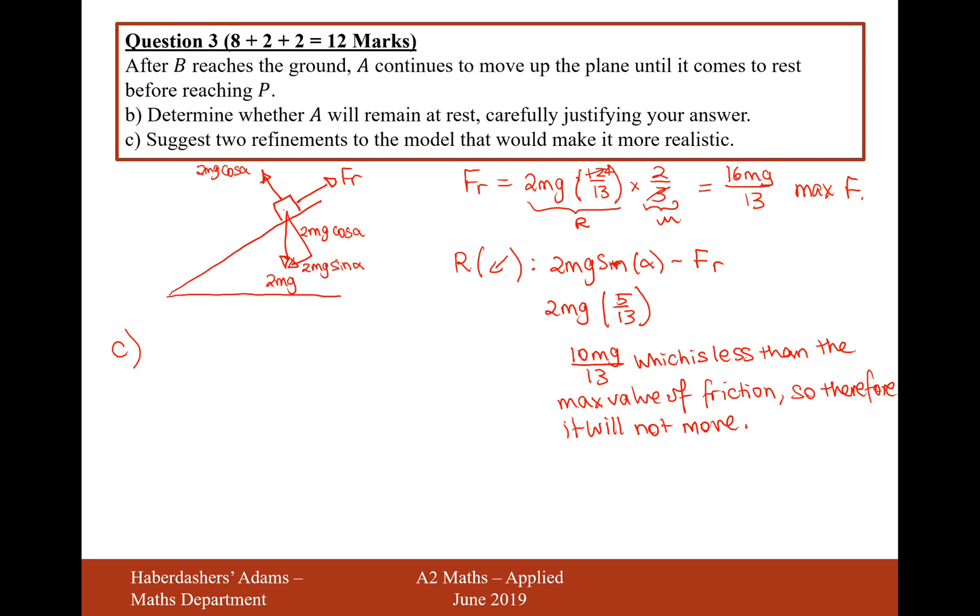Moving on to part C now, suggest two refinements to the model that would make it more realistic. Well, a couple of suggestions are down in the mark scheme, so have the model consider air resistance, and have the string use an extensible string, so slightly springy string, a more elastic type of string. So there we are, air resistance and extensible string. That's the answer for question 3, worth a total of 12 marks there, a big part A there. Let's now move on to the fourth mechanics question.